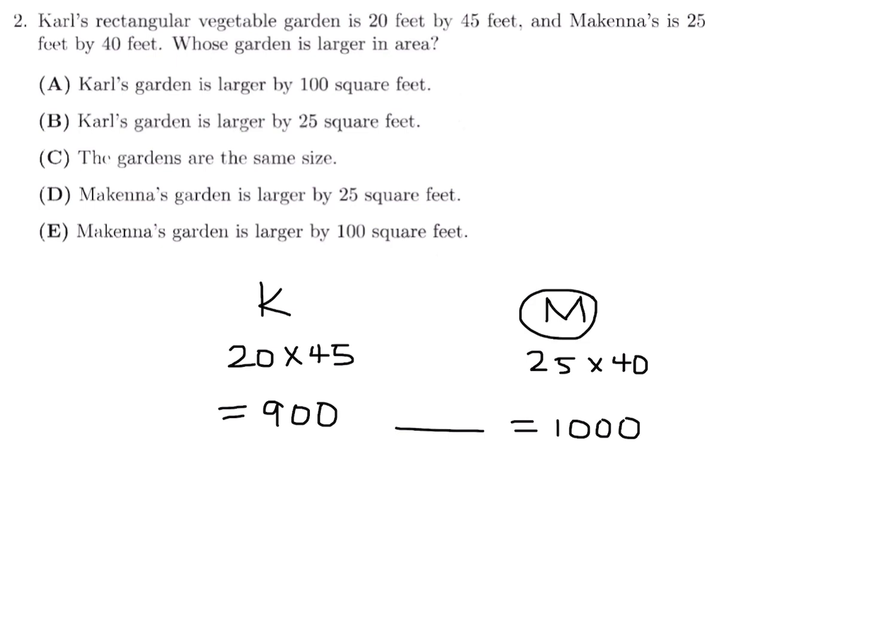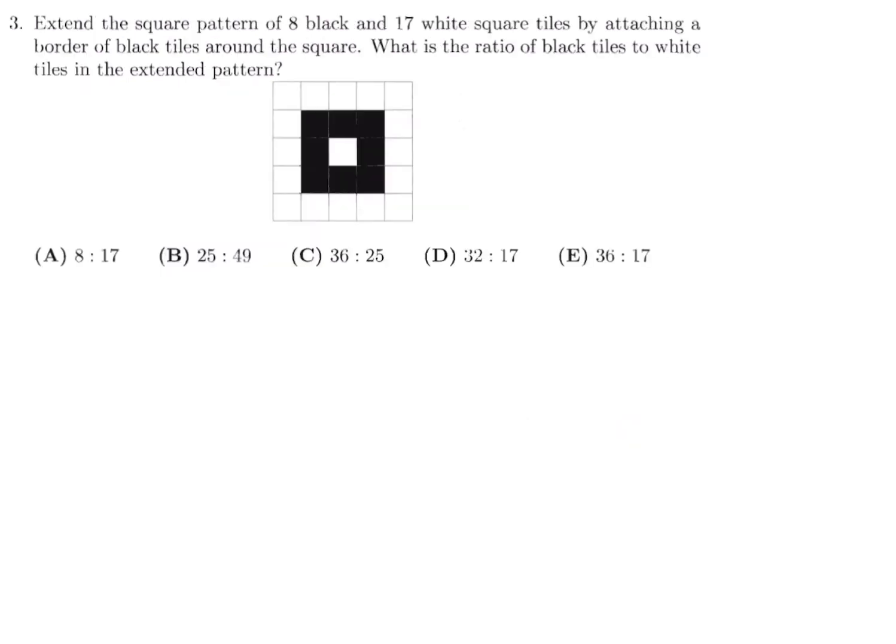Extend the square pattern of 8 black and 17 white square tiles by attaching a border of black tiles around the square. What is the ratio of black tiles to white tiles in the extended pattern? Initially the number of white squares: you have one in the middle and then you have 16 all around, and that's why it's 17, and they tell you that in the question.